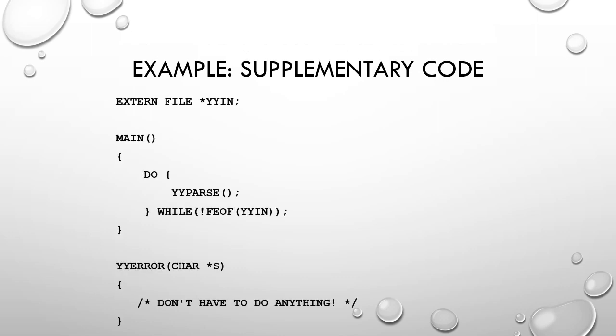In the third section, the supplementary code, you write your own C code. For example, in the main function you call yy_parse, which invokes the parse function. There is also an error function which checks for errors. These two functions are written in the supplementary code section.